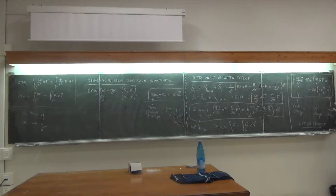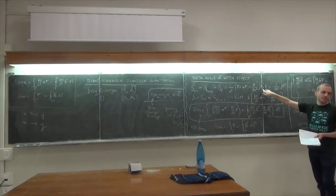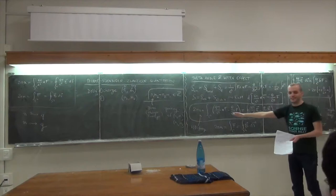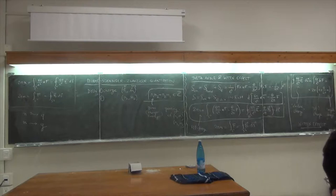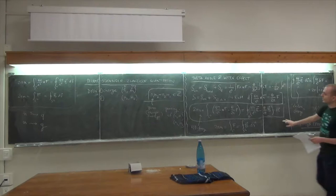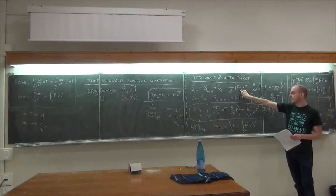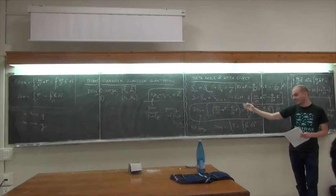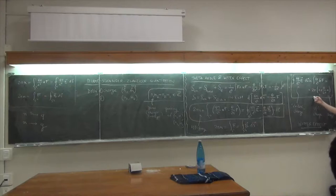There are two reasons to add the theta term even for U(1): first, we'll be interested in non-abelian gauge theories which in the infrared are described by abelian subgroups, so an instanton number in the UV non-abelian theory can induce a non-trivial instanton number in the low energy theory. Second, if we have both electric and magnetic charges treated as external sources, the abelian gauge theory lives on R⁴ minus the worldlines of those sources, and on such spacetimes one can have non-trivial instanton numbers even for U(1), determined by the electric and magnetic charges.